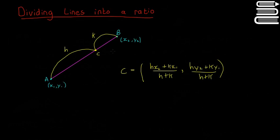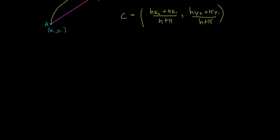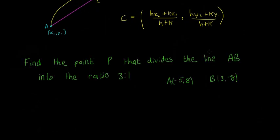So the best way to do this is probably with an example. So I will scroll down and write an example. So here we have our example here. Find the point P that divides the line AB into the ratio 3 to 1. So we have our point here, A is minus 5 and 8, our point B is 3 and minus 8.